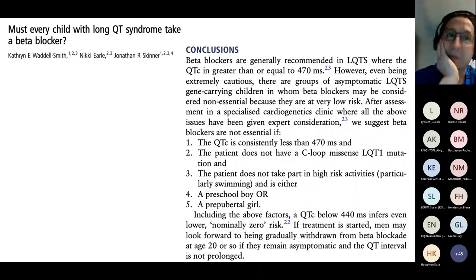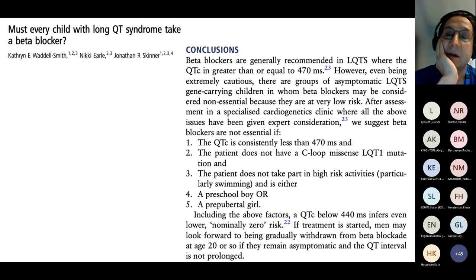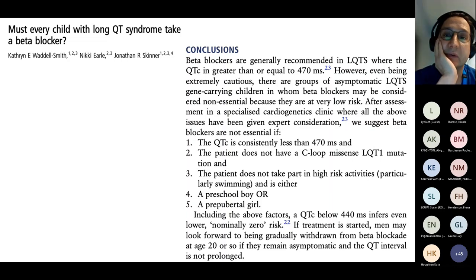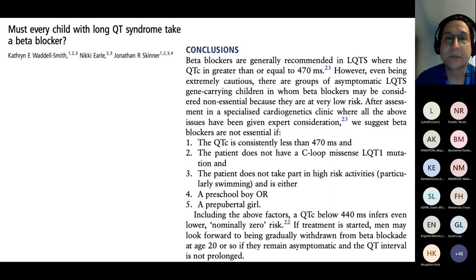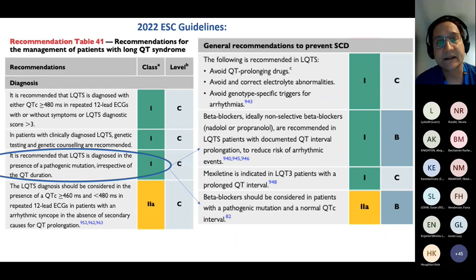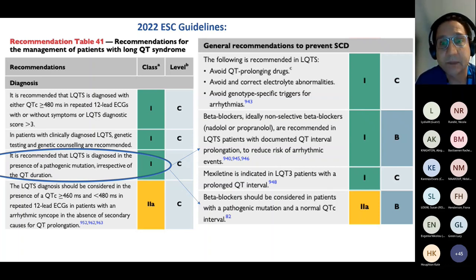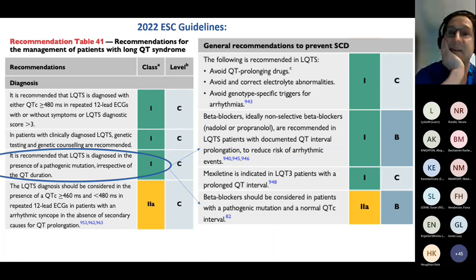I raise that because it's a really common question in paediatrics where patients are picked up on family screening, the children are entirely well, and you're talking to a family about committing to lifelong treatment with beta blockers. That said, the practice is relatively common that as soon as practically possible, in the absence of contraindications, most people with a pathogenic mutation are treated with beta blockers.